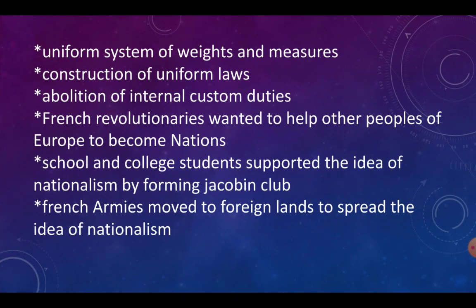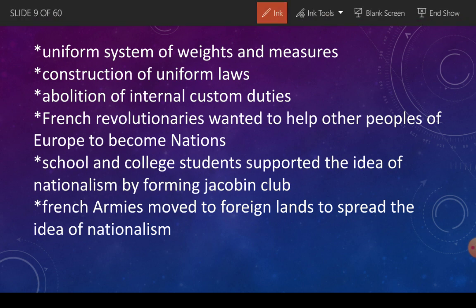Uniform system laaya gaya weights aur measures ke liye, alag alag uniform laws construct ki jaane laggin, aur jo custom duties thi unko khatam kar diya gaya. French revolutionaries chahate thay ki Europe ke jo doosre nations hain unki bhi help ki ja sake, aur wahaan par bhi nationalism spread kiya jaaye. Iske liye jo school aur colleges ke students the, unhonne nayi nayi clubs banaana shuru kar diya, jisko naam diya gaya Jacobin Club. Aur French army ne yeh zimma uthaya ki woh poore Europe ke andar nationalism ke idea ko spread karengi, aur iske liye usne alag alag countries mein jaana start kar diya.